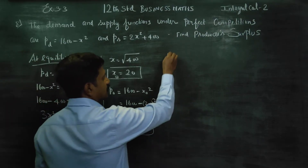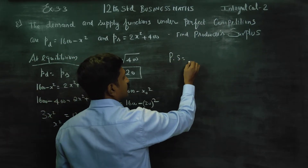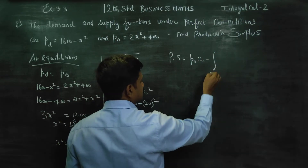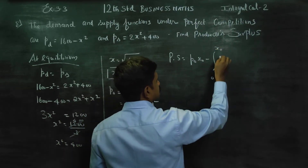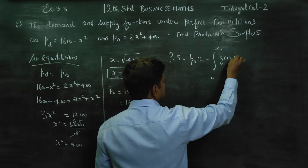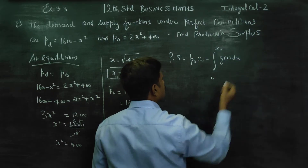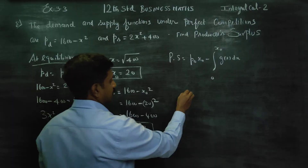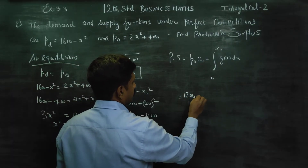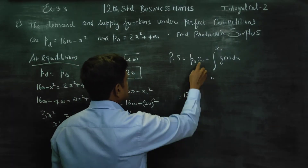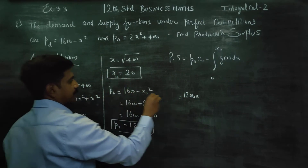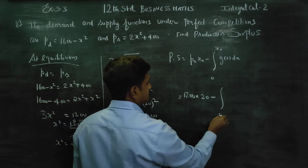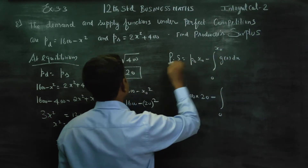Producer surplus is found using the formula: P0 times x0 minus the integration from 0 to x0 of the supply function.